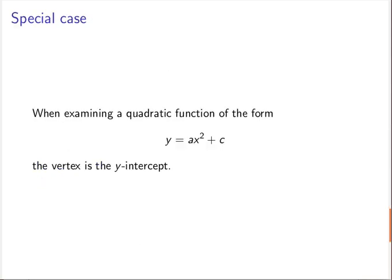Now there is a special case. In the event that the b value is 0, then the vertex and the y-intercept are the same point.